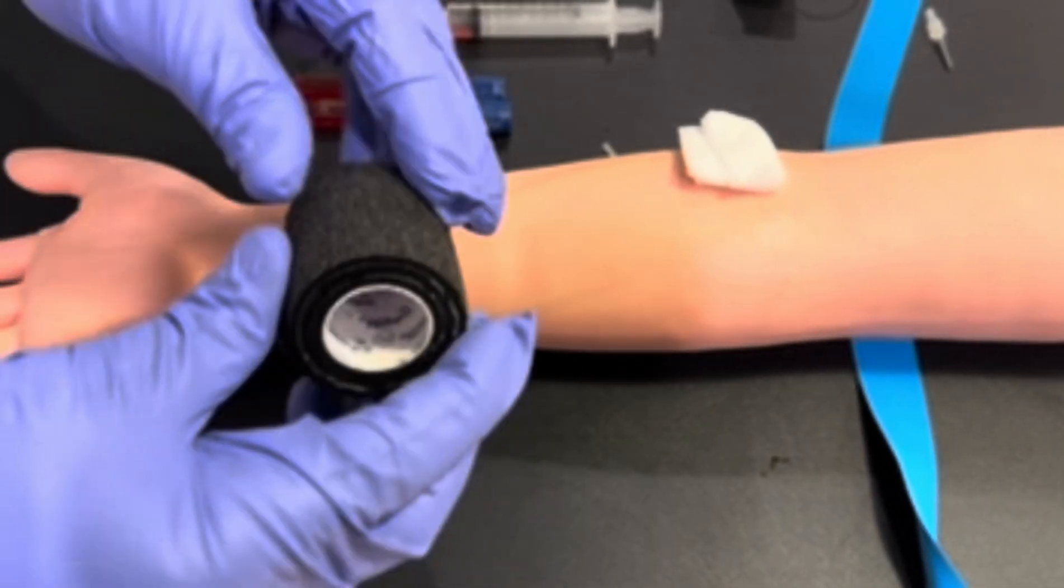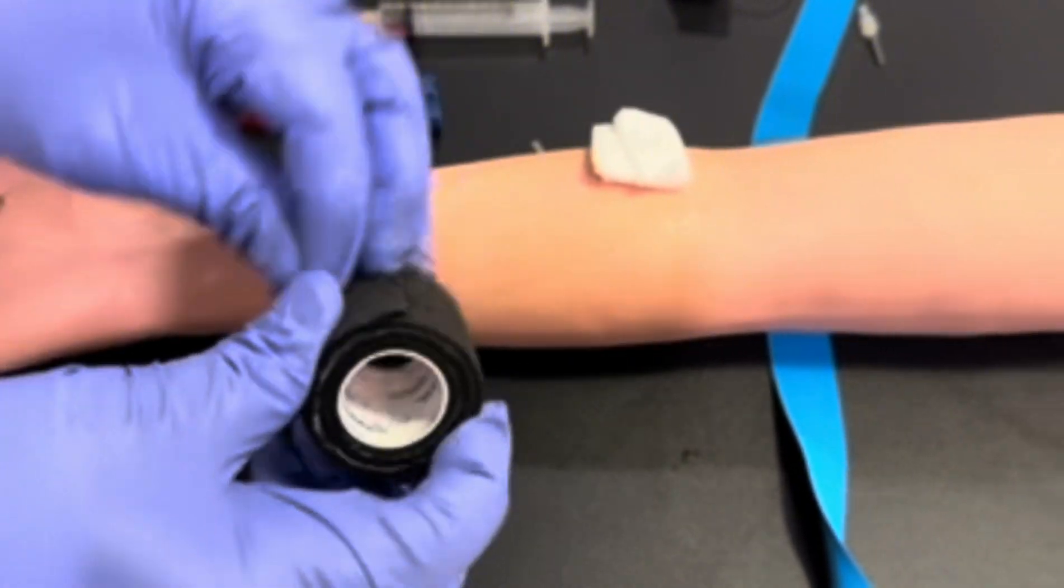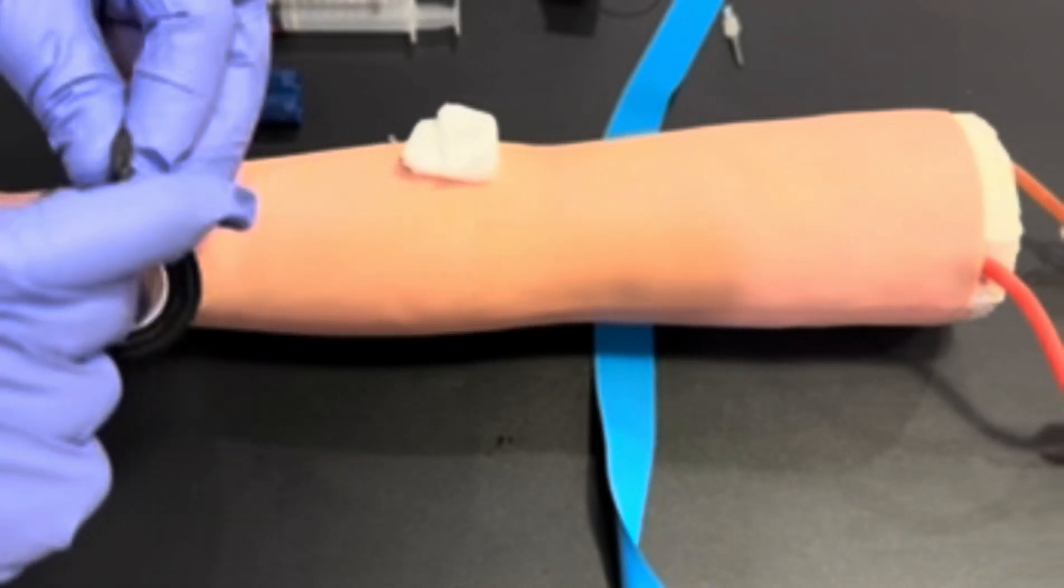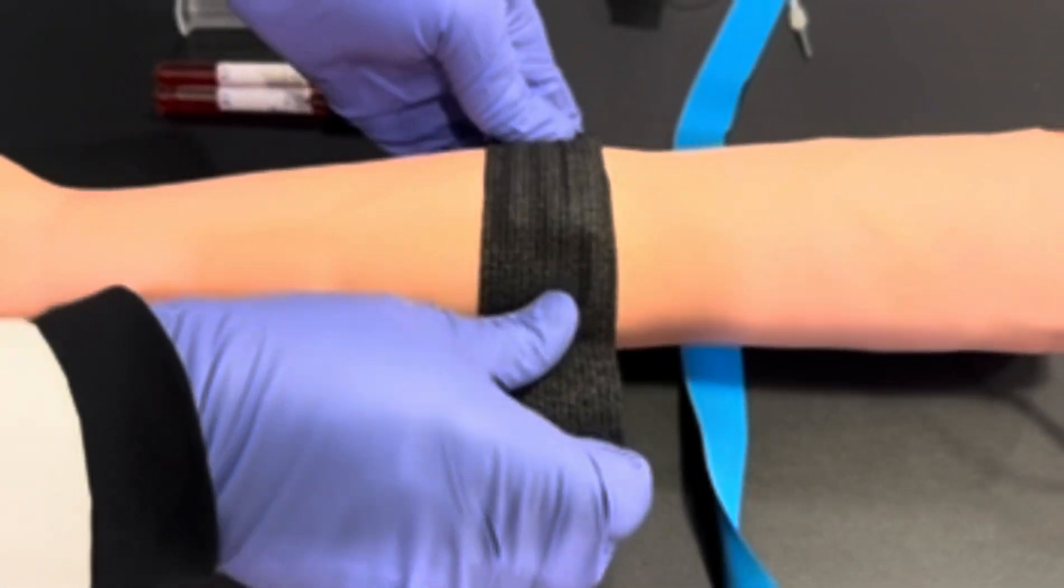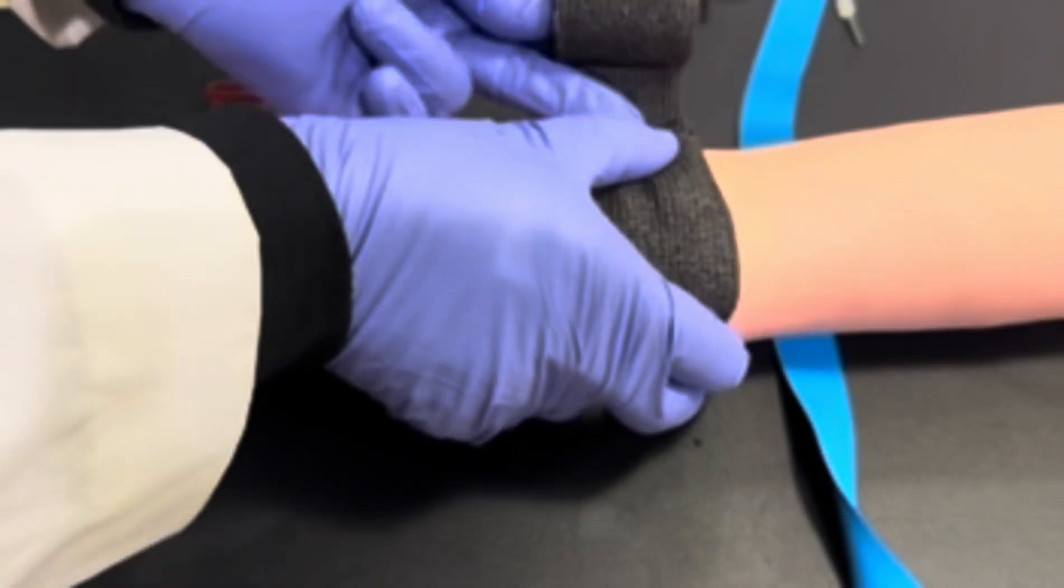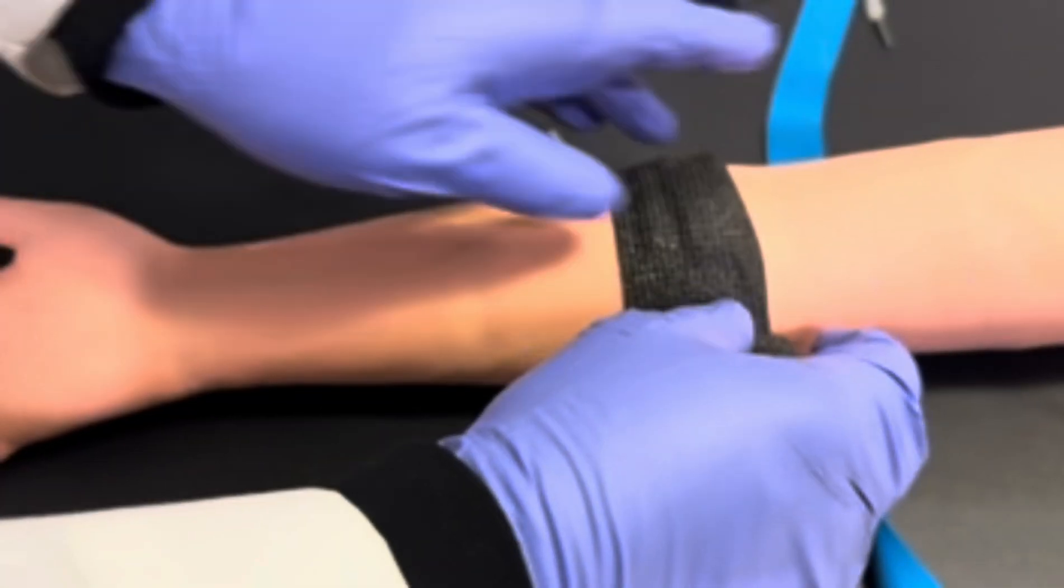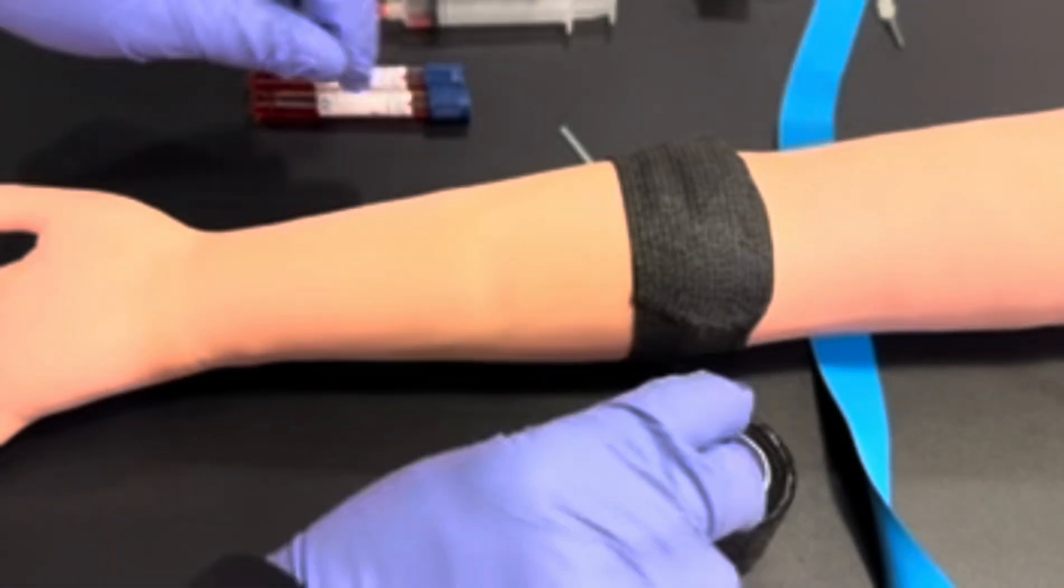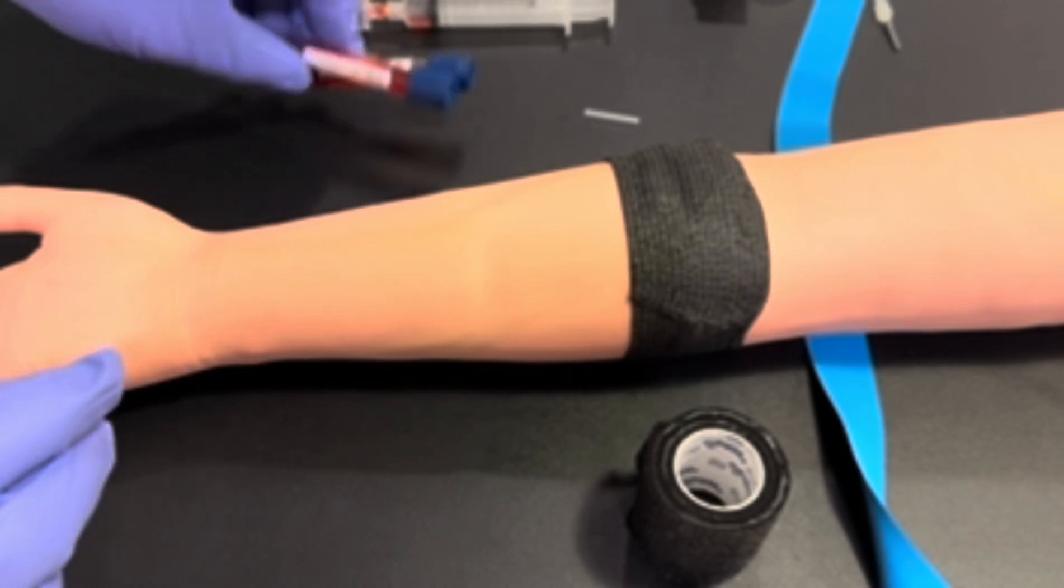Safely discard your butterfly needle after transferring the blood into each vacutainer tube. Go back to assess your patient. Apply a CoFlex bandage to the site, which will complete your venipuncture procedure.